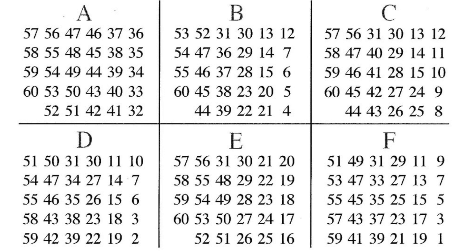Moving on to the next box, C — is your number in this group? If it is, write the letter C down. Then do the same for D, E, and F as well. Nothing changes.